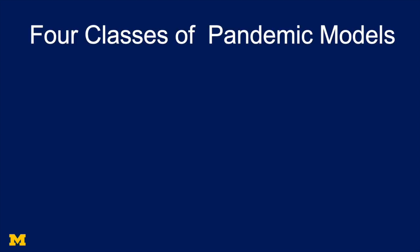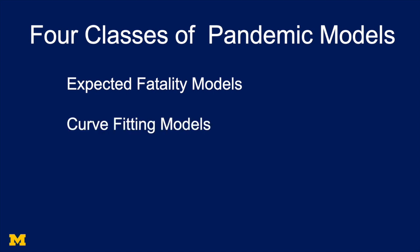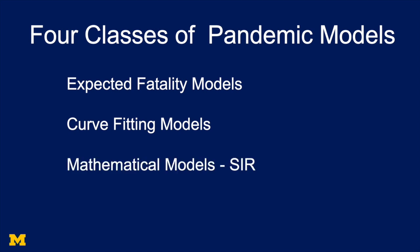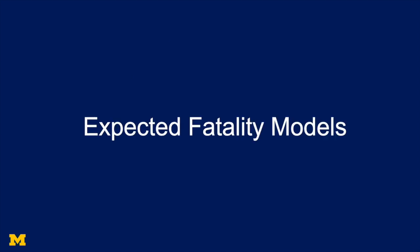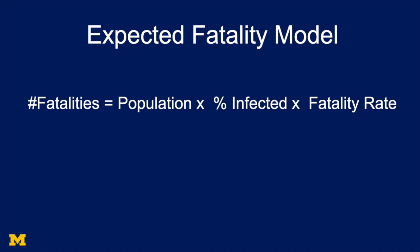So let's start out by talking about the kinds of models we might use to understand a pandemic or an epidemic. The first will be expected fatality models, and that's what I'm going to cover in this video. There's also curve fitting models, mathematical models — something called SIR models, done with mathematical equations — and then agent-based models, which you can think of as computer models. In this lecture, we're going to cover the first of these four types: expected fatality models.